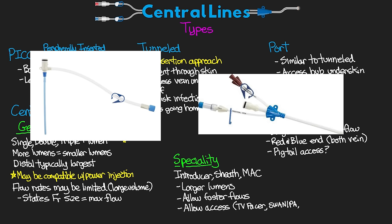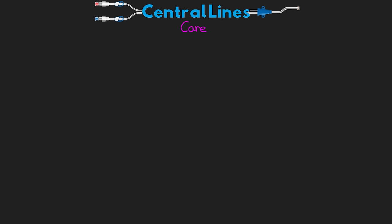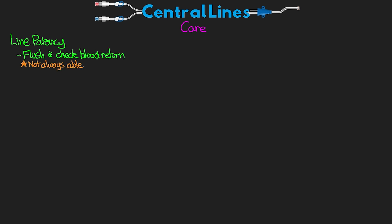Now let's talk about the care of our central lines. There are quite a few things to be aware of. First is line patency — at least once a shift we do want to flush our line and check for blood return. We're not always going to be able to do this depending on what we have infusing through the line. Do not flush a line that has medication that would be detrimental to the patient, such as a vasopressor — doing so would essentially be giving them a large bolus of that medication. When you do flush, flush with at least 10 mL after getting blood return.